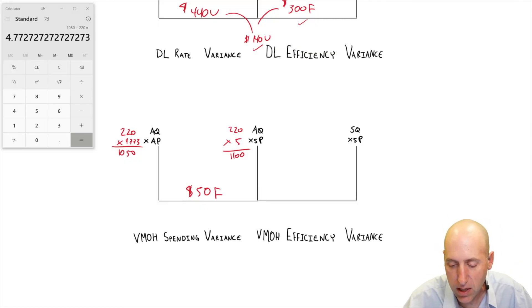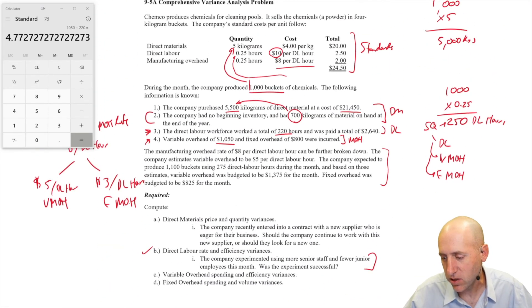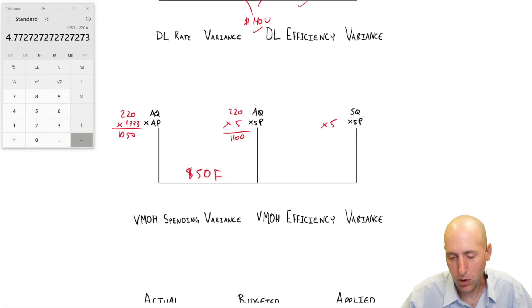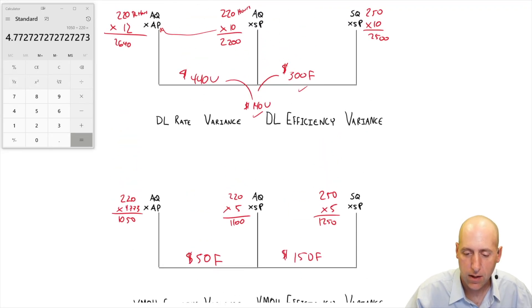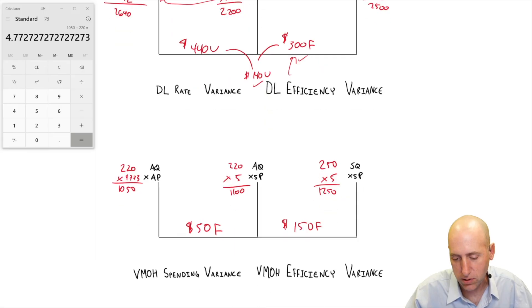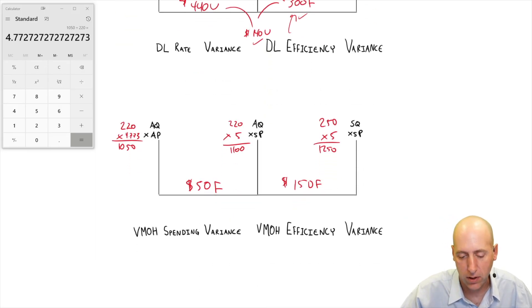SQ times SP: the SP remains $5. The SQ is the same because it's based on direct labor hours, so it's the same as the one above - it's 250. 250 times 5, I get $1250. The difference here is $150. It should have taken me 250 hours, it took me 220. This is a favorable variance. And if it's a favorable variance up here, it's all about the labor hours, so it's going to be a favorable variance here. 150 favorable plus 50 favorable - that gives us $200 favorable overall on variable overhead.